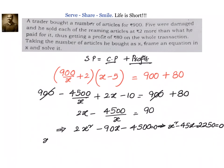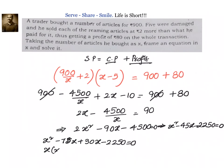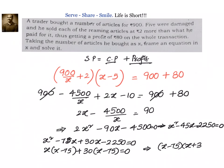Now let us split the middle term. Sum equals minus 45 and product is minus 2250. We can write it as x squared minus 75x plus 30x minus 2250 equals 0. Taking x common: x into (x minus 75) plus 30 into (x minus 75) equals 0. So (x plus 30)(x minus 75) equals 0, giving x equals 75 or x equals minus 30.